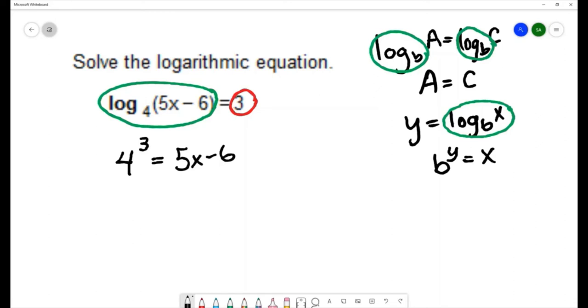That's the pattern that you follow every time you convert the log to an exponential. Then let's work out what four to the third power is. 4 to the third power is 64. We'll solve this equation by getting x by itself. We're going to add 6 to both sides. It gives me 70 equals 5x, and we'll divide both sides by 5 to get x equals 14.